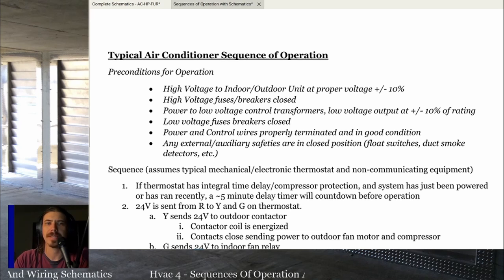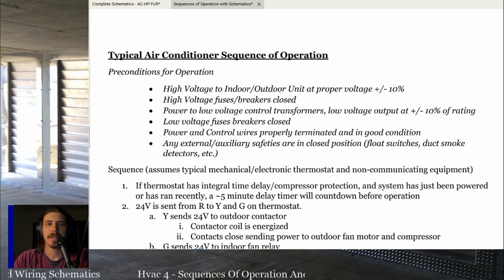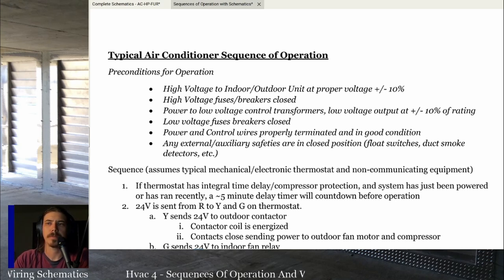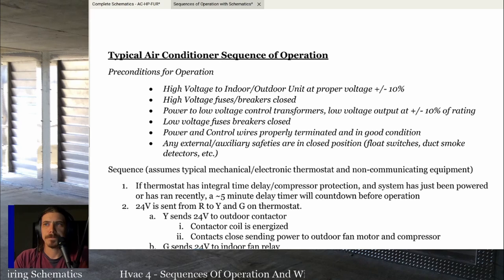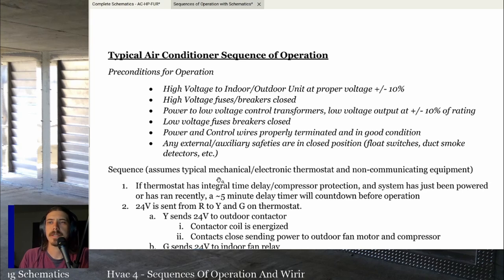Your low voltage fuses and breakers need to be closed, your power and control wires have to be properly terminated and in good condition, and any external or auxiliary safeties need to be in the closed position. When we look at a sequence of operation, it's not going to include things people added after installation — float switches, duct smoke detectors, EasyTrap switches, whatever the case may be. If those are in the open position cutting off power to your thermostat or your outdoor contactor's yellow wire, things aren't going to operate.